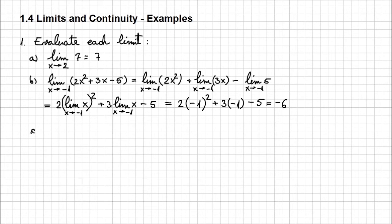Let's evaluate the limit of (x squared minus 3) over (5 minus x) when x approaches minus 2. We apply the limit of a quotient, which is the quotient of the limits. Both the numerator and denominator are differences — x squared minus 3, and 5 minus x — so we can separate those as well.